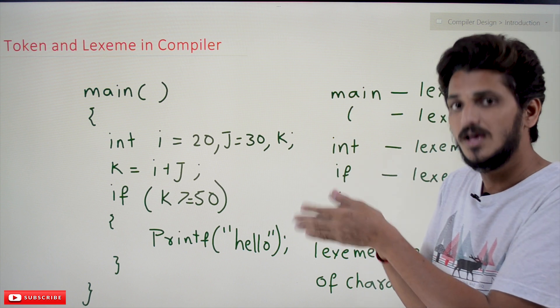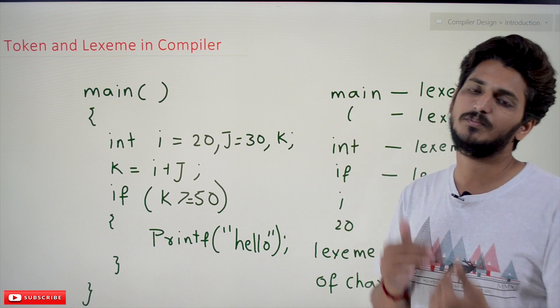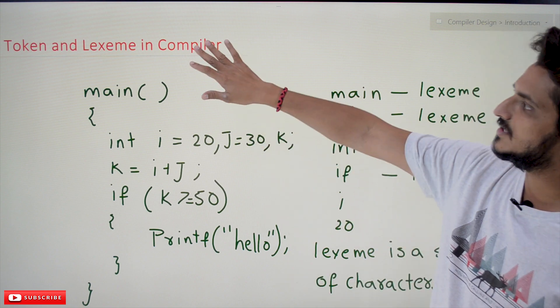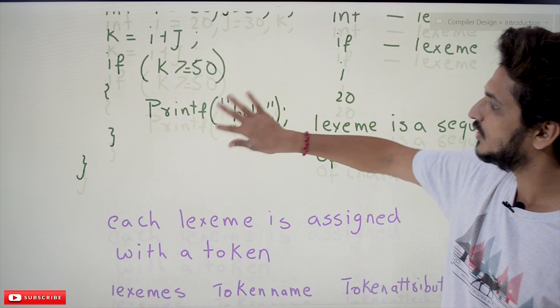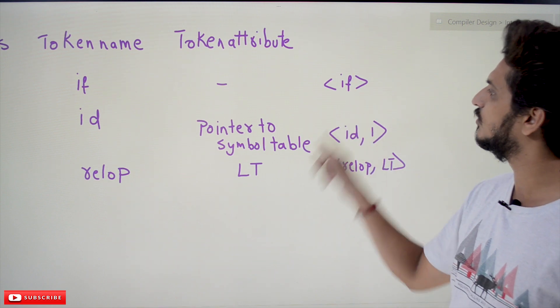For each lexeme we are having a separate token. Lexical analysis phase is going to take the source code as input and it is going to generate the tokens as output.